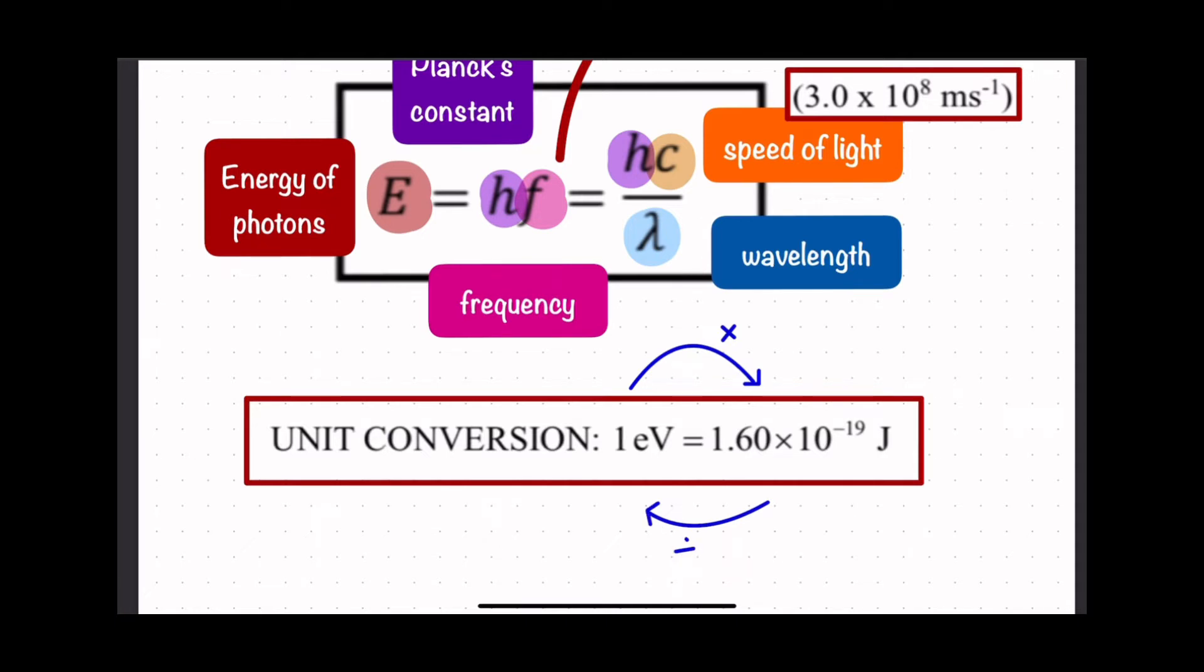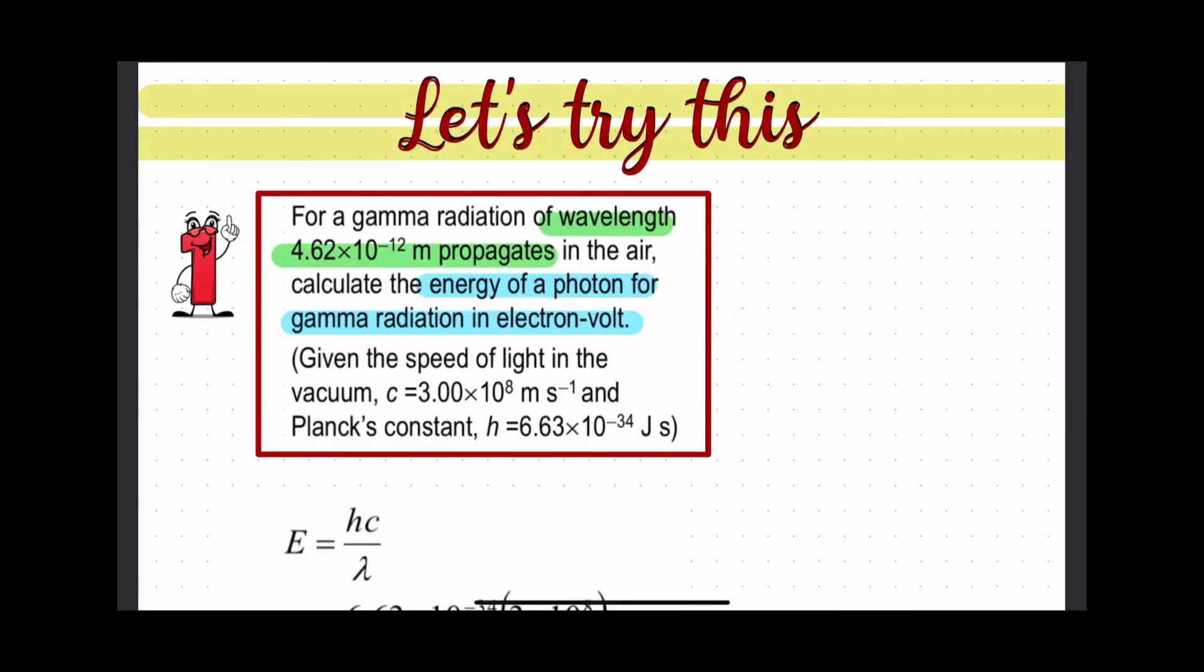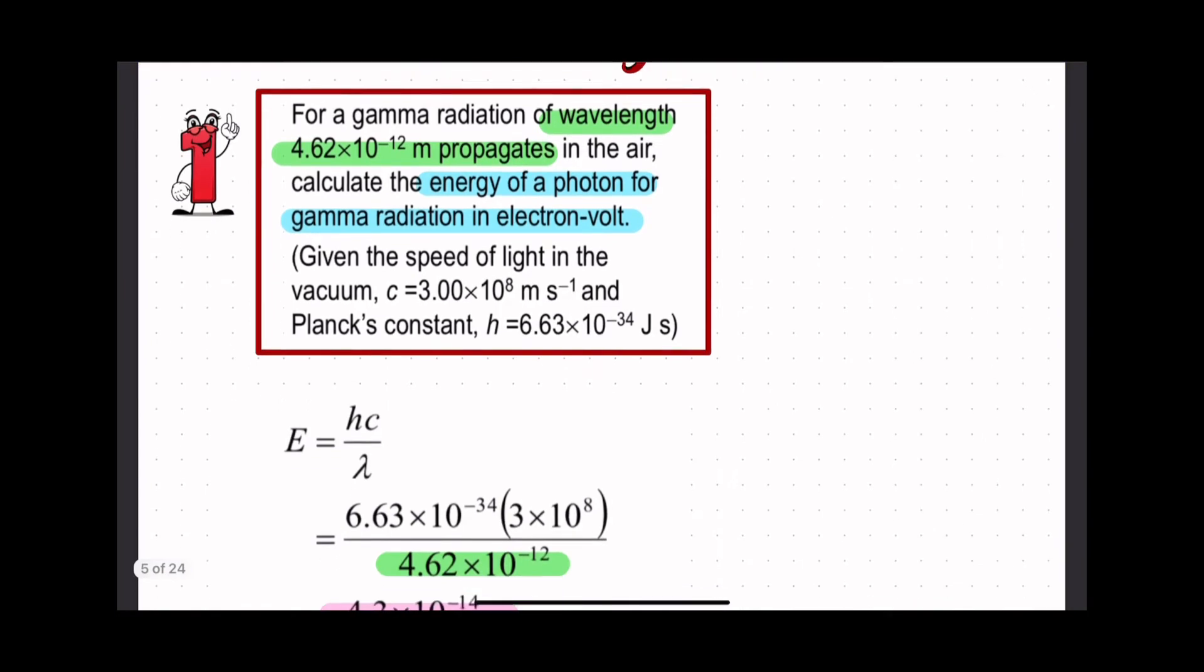Alright, let's try this. We have a gamma radiation of wavelength 4.62 times 10 to the power of negative 12 meters propagating in air. Calculate the energy of the photon for gamma radiation in electron volts.